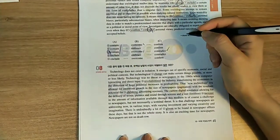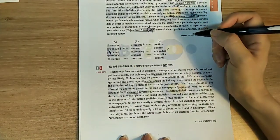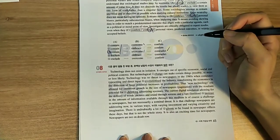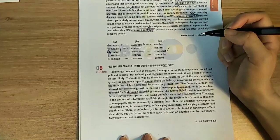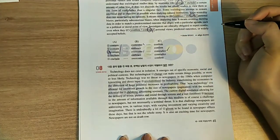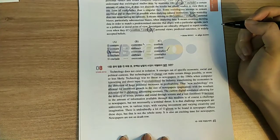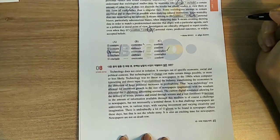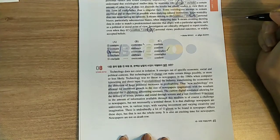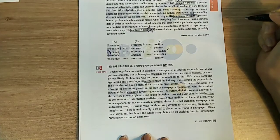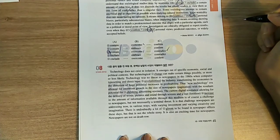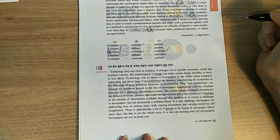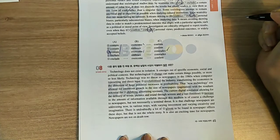Technology does not exist in isolation. It emerges out of specific economic, social, and political contexts. But technological change can make certain things possible, or more or less likely. Technology was no threat to newspapers in the 1980s when computer typesetting and direct input revolutionized the industry, transforming the economics in the direction of huge potential increases in profitability.